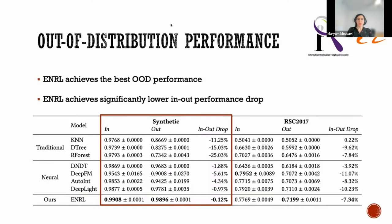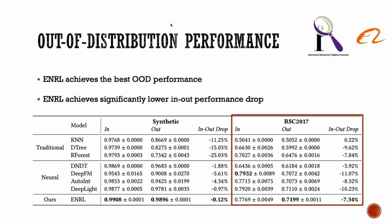For RecSys Challenge 2017, traditional machine learning methods such as k-nearest neighbors fairly achieved good performance on in-out distribution data due to their limited capacity. Neural models perform well on in-distribution warm users, but they suffer a significant performance drop on out-of-distribution cold users.